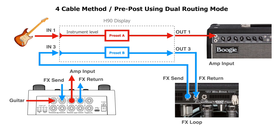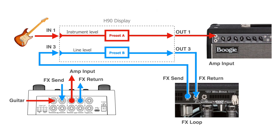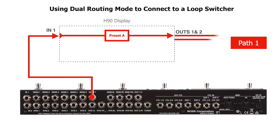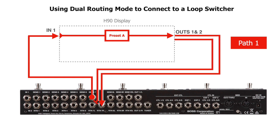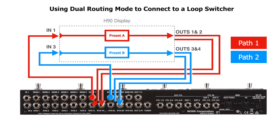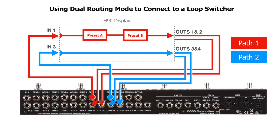The drawback to pre-post connections with dual routing mode is that we no longer have the flexibility of using inserts. But using the H90 like two separate guitar pedals, this doesn't matter much — we can just place pedals before or after each path. In this setup, path 1 (in 1 and out 1) should be set to instrument level, and path 2 (in 3 and out 3) should be set to line level for most amps. If using a MIDI loop switcher, dual routing mode allows us to assign each path to its own loop, giving tremendous flexibility to place Eventide's effects anywhere in the signal chain.